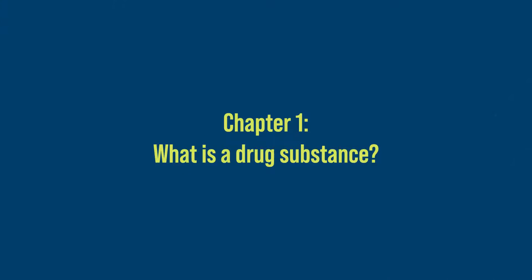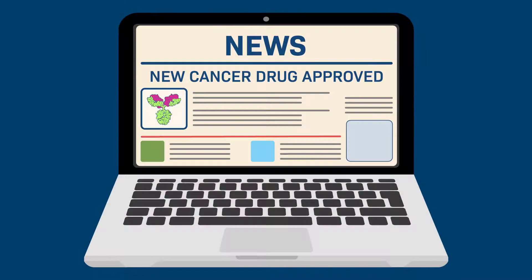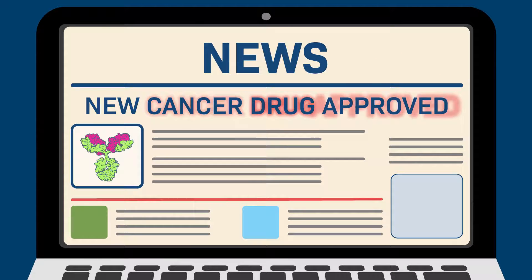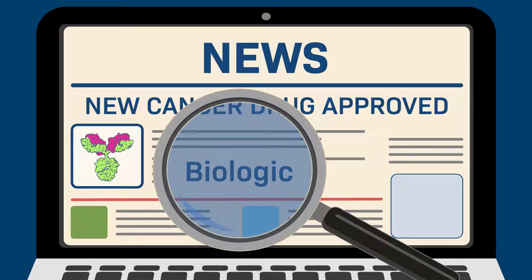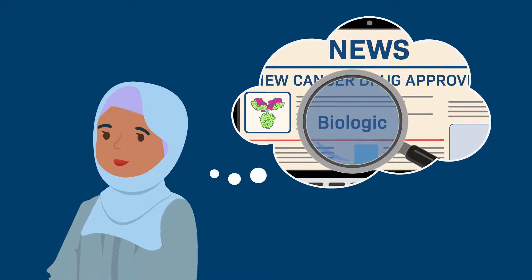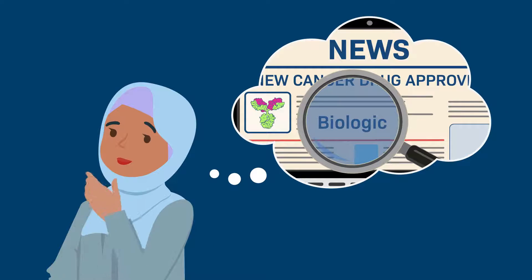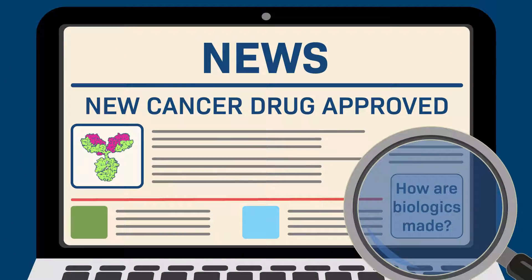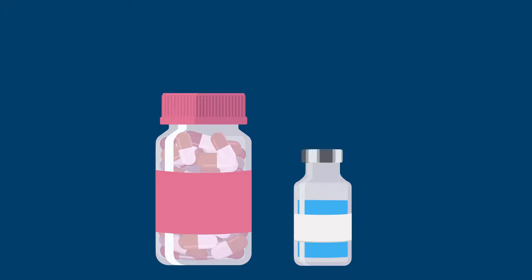Chapter one: What is a drug substance? Imagine reading this headline in the news: 'New cancer drug approved.' Upon further reading, you discover that the new drug is a biologic. You may wonder what a biologic is and how a new one is even made in the first place. Before we discuss how new biologic drugs are made, we must first consider a common component found in all medicines: a drug substance.